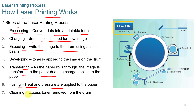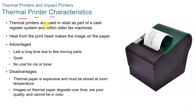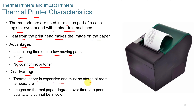With thermal printer characteristics, thermal printers are used in retail as part of cash register systems and with older fax machines. Heat from the print head makes the image on the paper. The advantages are they last a long time due to few moving parts, they're quiet, and there's no cost for ink or toner. The disadvantages are that thermal paper is expensive and must be stored at room temperature, and images on thermal paper degrade over time — they're poor quality and cannot be in color.